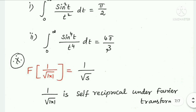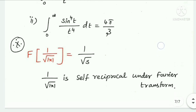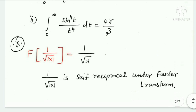Finally, the Fourier transform of 1/√|x| equals 1/√s where s > 0. This means 1/√|x| is a self-reciprocal function under the Fourier transformation.